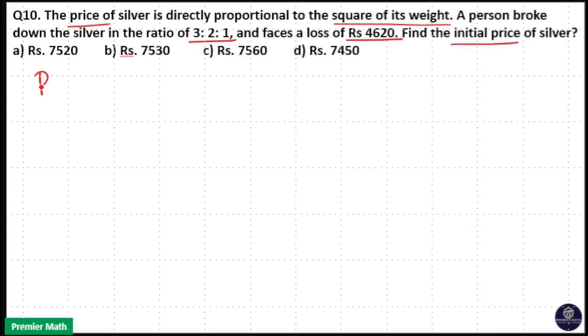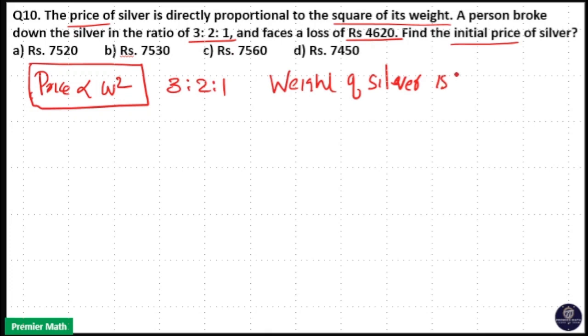Here price is directly proportional to the square of its weight. A person broke down silver in the ratio of 3:2:1. In both cases, weight of silver is same, that is 6 parts.